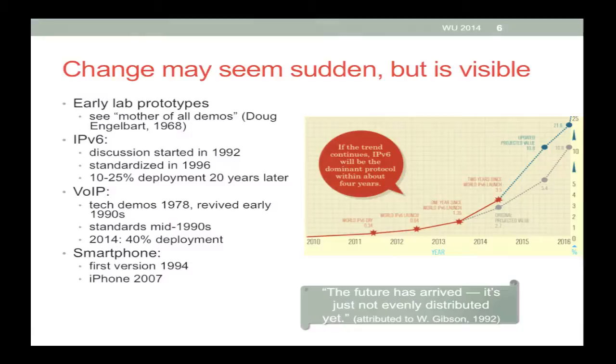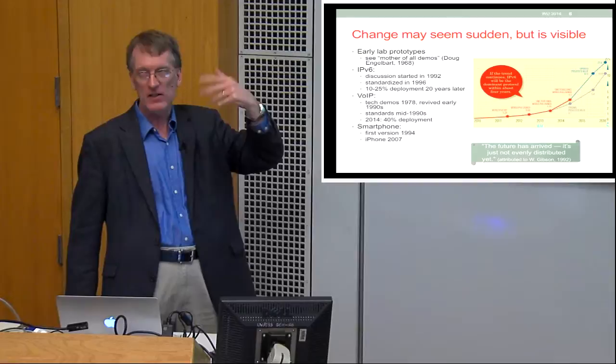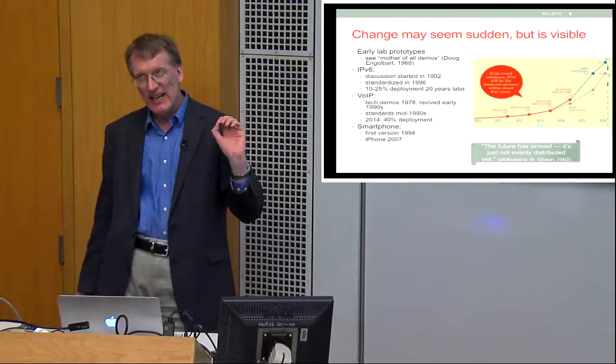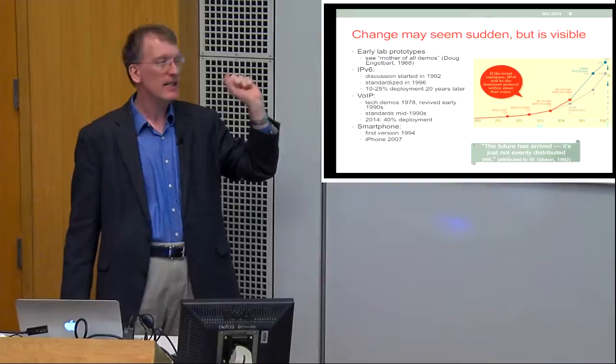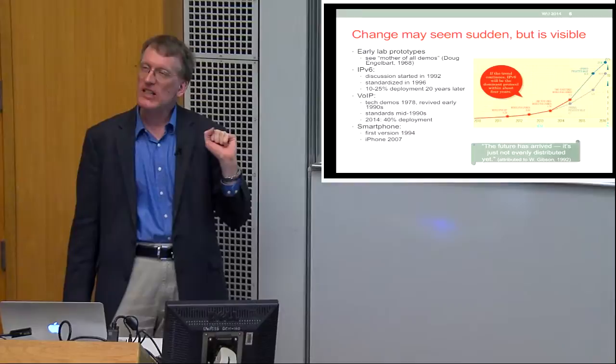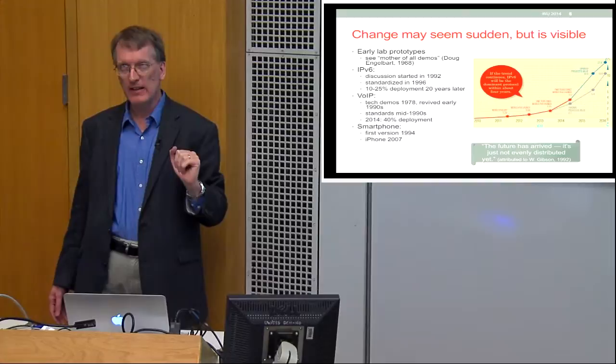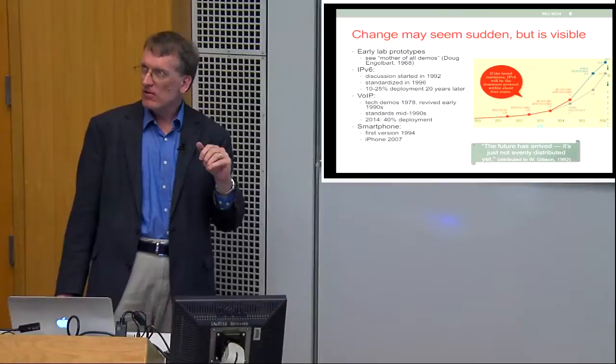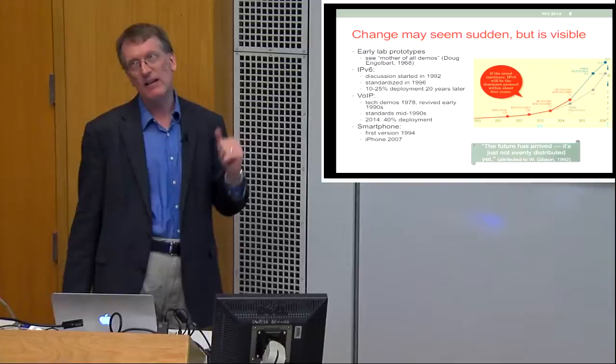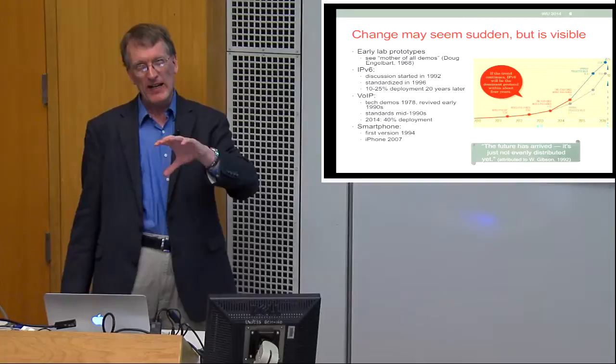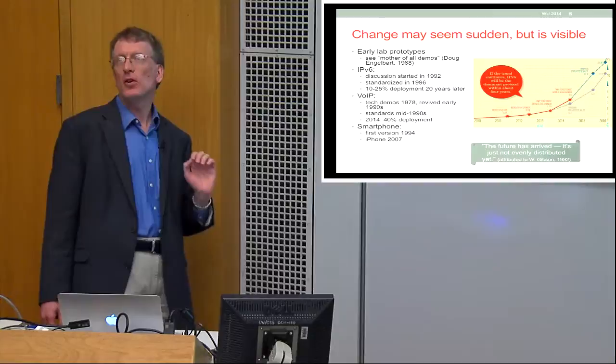Voice over IP as a technology is another example where early technology demos date back to 1978. It went dormant because the technology infrastructure wasn't ready, revived in the early 1990s, and standards were done in the mid-1990s. In 2014, again 20 years later, we still have only about 40% deployment, in the sense that all your cell phones still use very much a circuit-switched model for voice. Even technologies that didn't require digging fiber still take a dramatic number of years before they reach significant, as opposed to early adopter, share. Smartphones are another example where early versions existed well before mass market adoption.